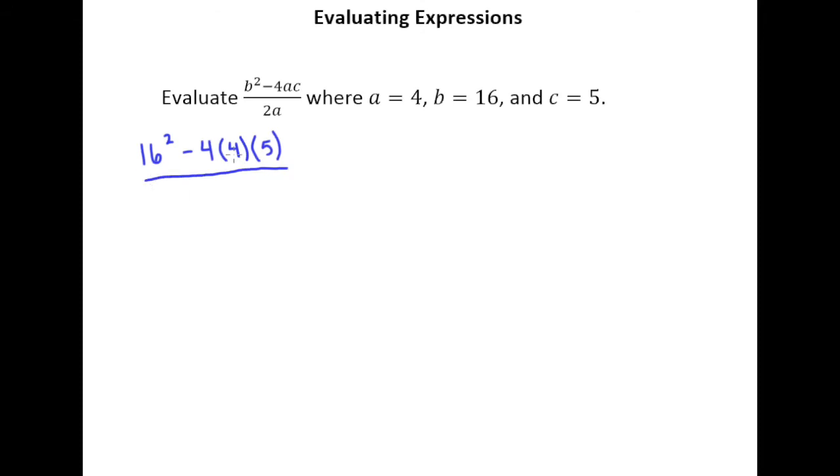I don't want to leave the parentheses off because if I just have 4, 4, 5 that would look like the number 445. But the parentheses tell me I'm multiplying these numbers together. And then 2 times 4 on bottom.